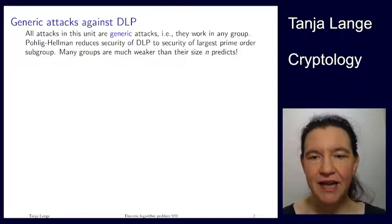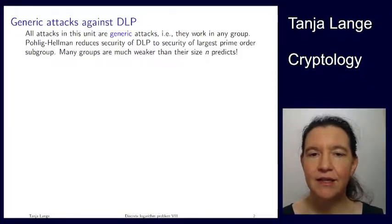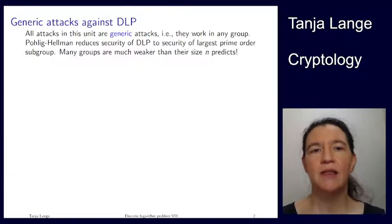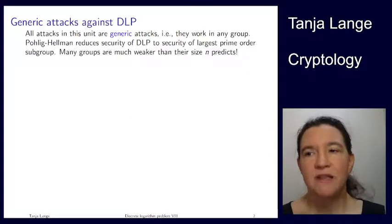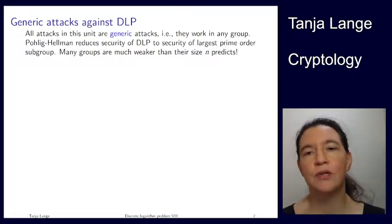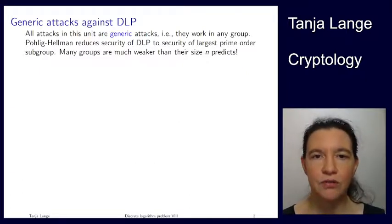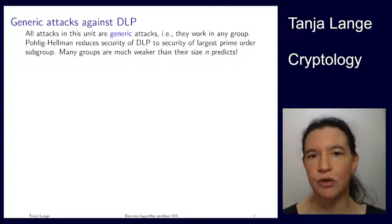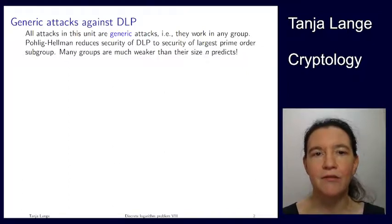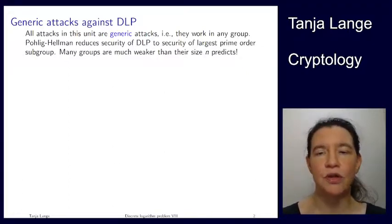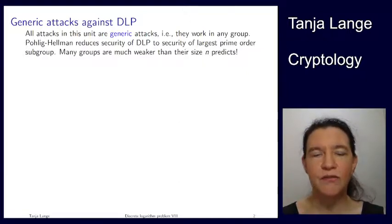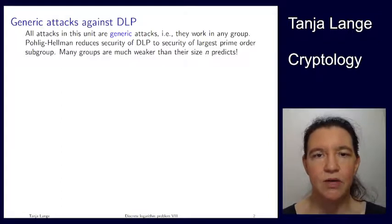We have now seen several attacks, and I want to highlight that these attacks are all what we call generic attacks. Generic attacks means there's nothing in these attacks on the discrete log problem which depended on the elliptic curve groups. I did specify some functions such as the step function using the x-coordinate, or for distinguished points taking the top bits of the x-coordinate, but that is just to make it work. Any group used for cryptography must have some representation, and whatever way you use for representing it is also the way you use for defining the step function in the Pollard rho method. So there's nothing specific in these attacks that were most dependent on elliptic curves — they work in any group for the discrete log problem.